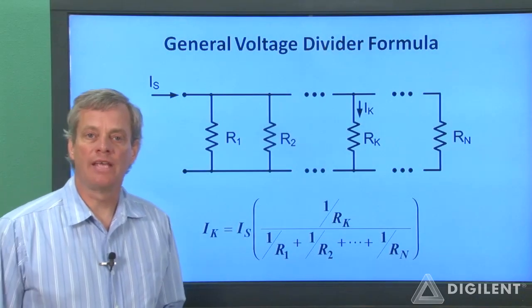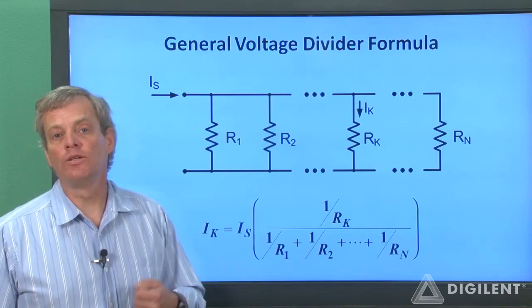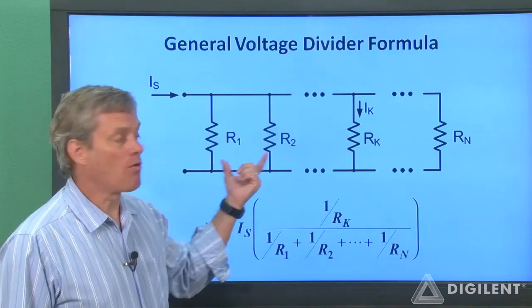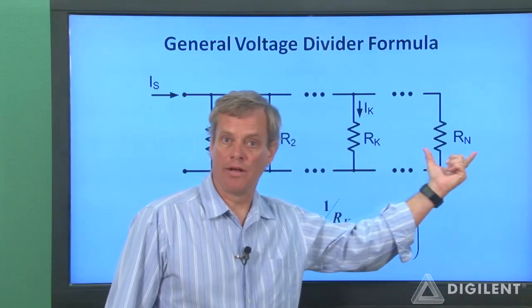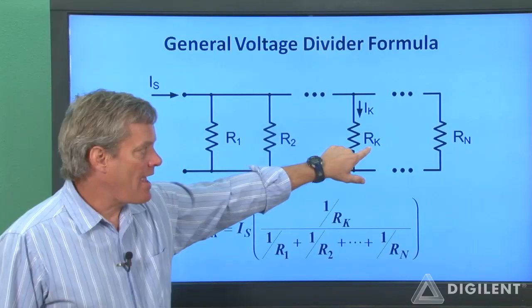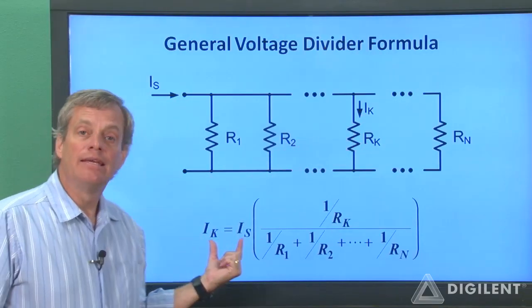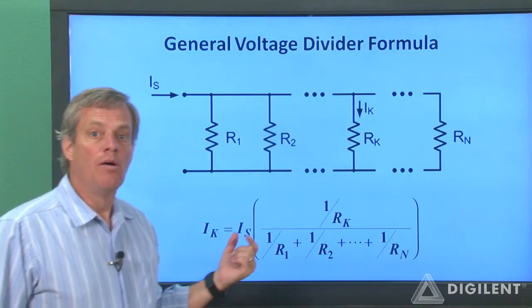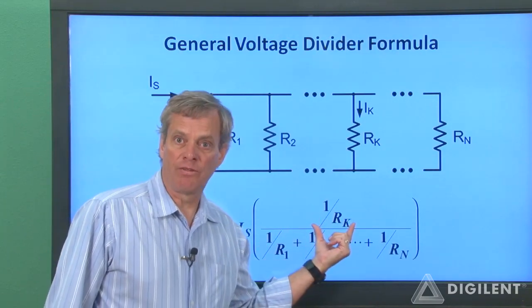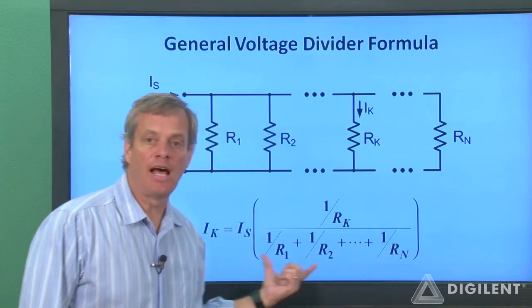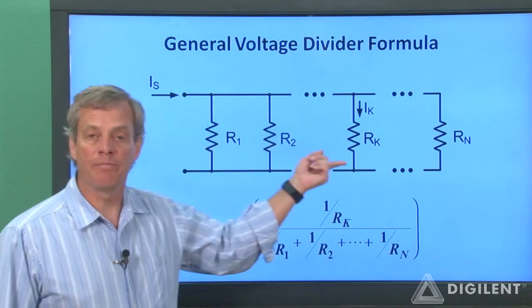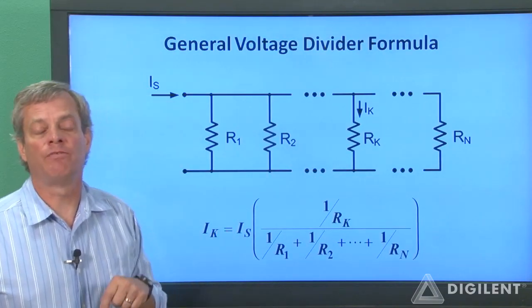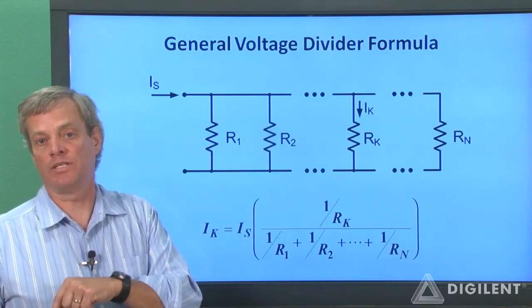Before doing examples, let's look at the general current divider formula. Suppose we have N resistors in parallel: R1, R2, and so on up to R_N. The current in the kth resistor, I_k, equals the total current into the combination multiplied by the inverse of R_k, divided by the sum of the inverses of all resistances in the parallel combination. Note that if N is greater than 2, we unfortunately cannot simplify this to the simpler form used for the two-resistor case.